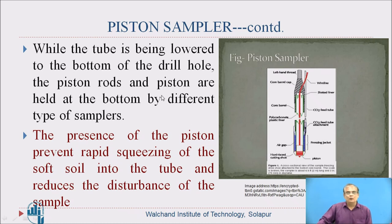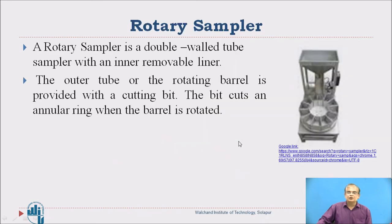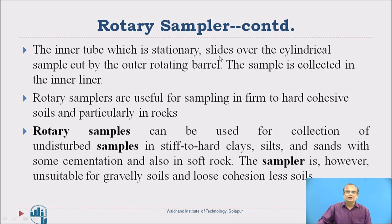While the tube is being lowered to the bottom of the drill hole, the piston rods and the piston are held at the bottom. The next type is the rotary sampler. It is a double-walled tube sampler with an inner removable liner; the outer rotating barrel is provided with a cutting bit. The bit cuts the soil, and the inner tube, which is stationary, slides over the cylindrical sample cut by the outer rotating barrel. The sample is collected in the inner liner. Rotary samplers are useful for sampling firm to hard cohesive soils and can be used for undisturbed samples in stiff to hard clays.